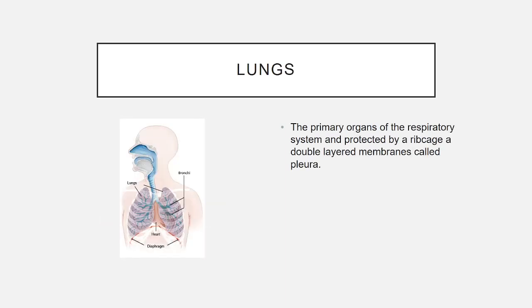Lungs. The lungs are the primary organs of the respiratory system and are protected by the rib cage and a double-layered membrane called the pleura.